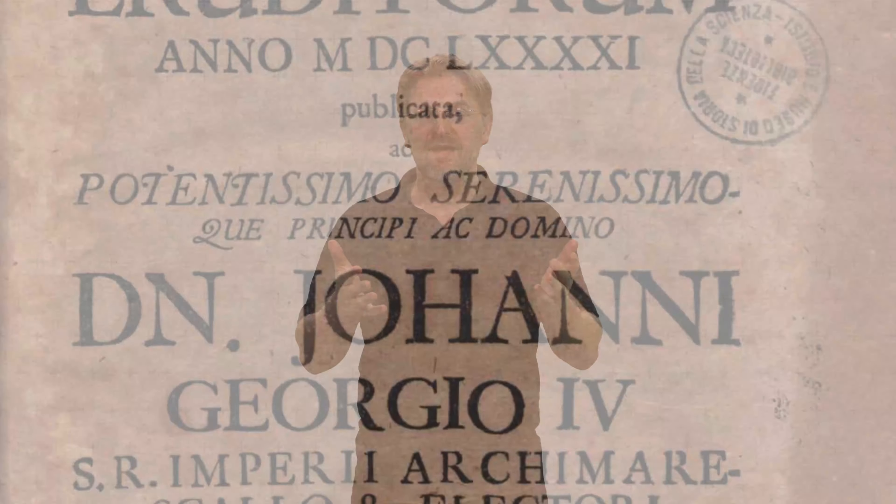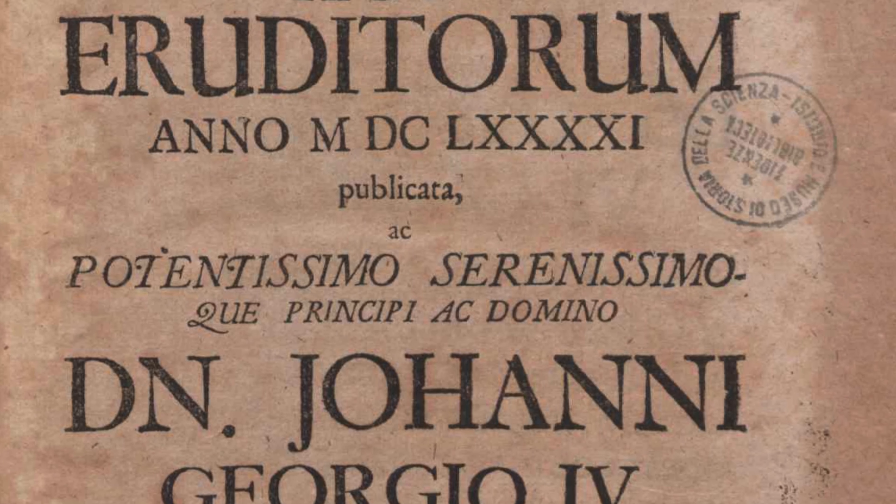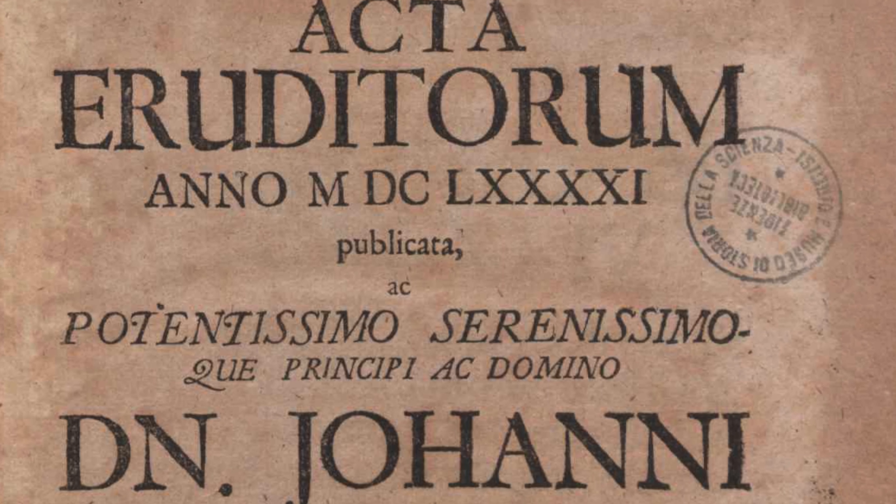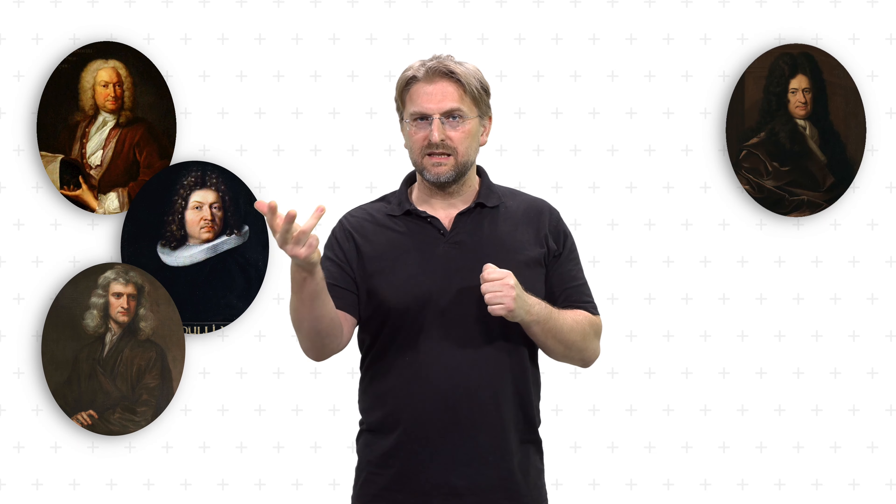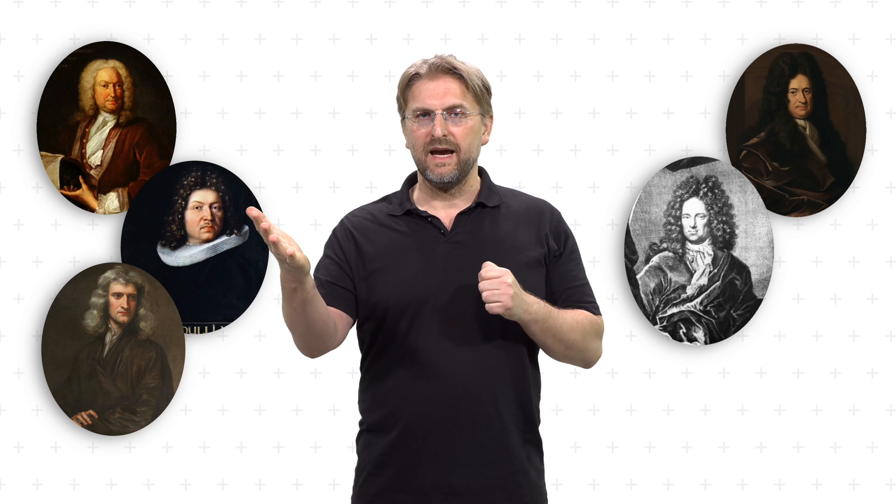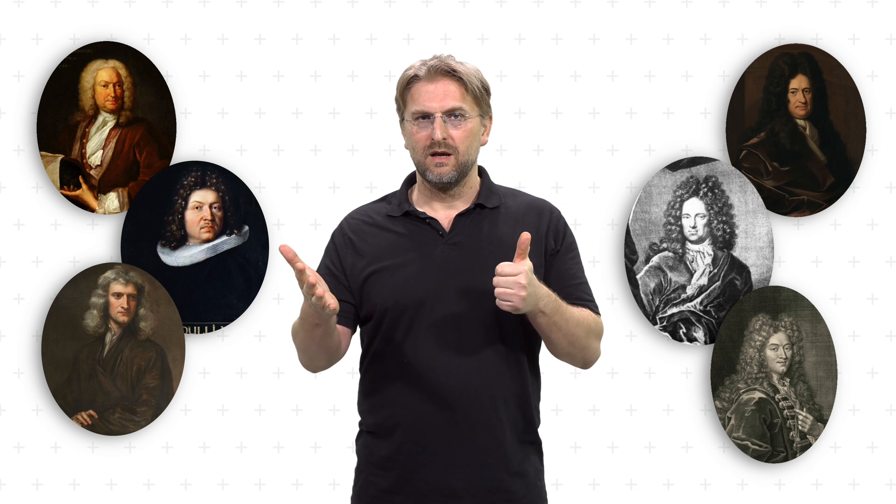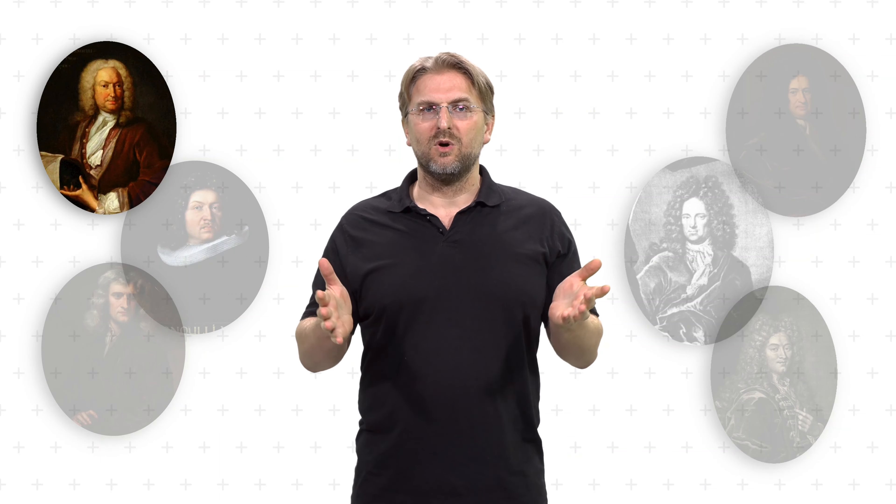In 1696, Johann published the Brachistochrone Problem in the Acta Eruditorum, the first scientific journal of the German-speaking lands of Europe, to challenge, as he wrote, the most astute mathematicians in the whole world. Six solutions were received, one from Johann, his brother Jacob, Newton, Leibniz, the German mathematician Tschirnhaus, and de l'Hôpital. Johann's solution is seen as the most elegant.